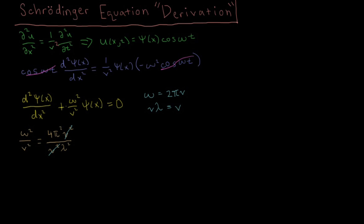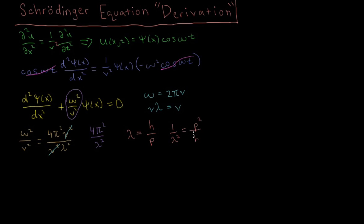For this 4 pi squared over lambda squared, we need to know about the wavelength. Looking at the de Broglie wavelength from several videos ago, the wavelength of a particle equals Planck's constant divided by its momentum. So 1 over lambda squared, inverting and squaring, gives us momentum squared over Planck's constant squared.